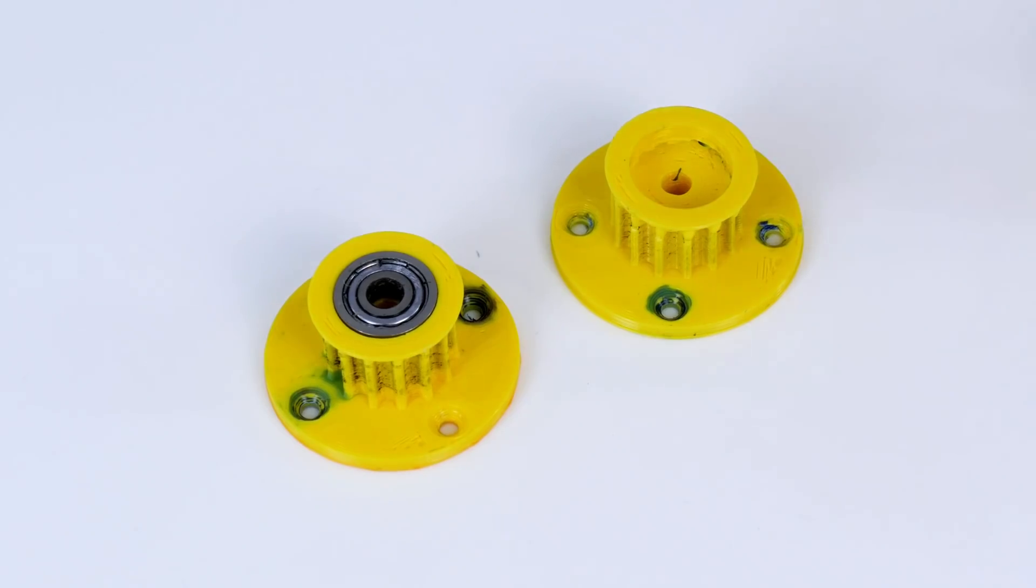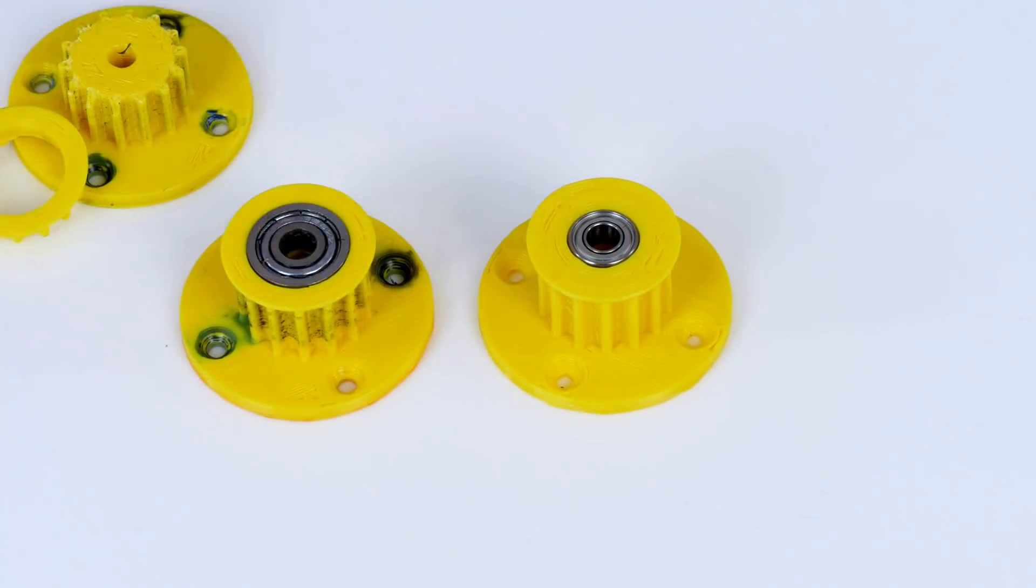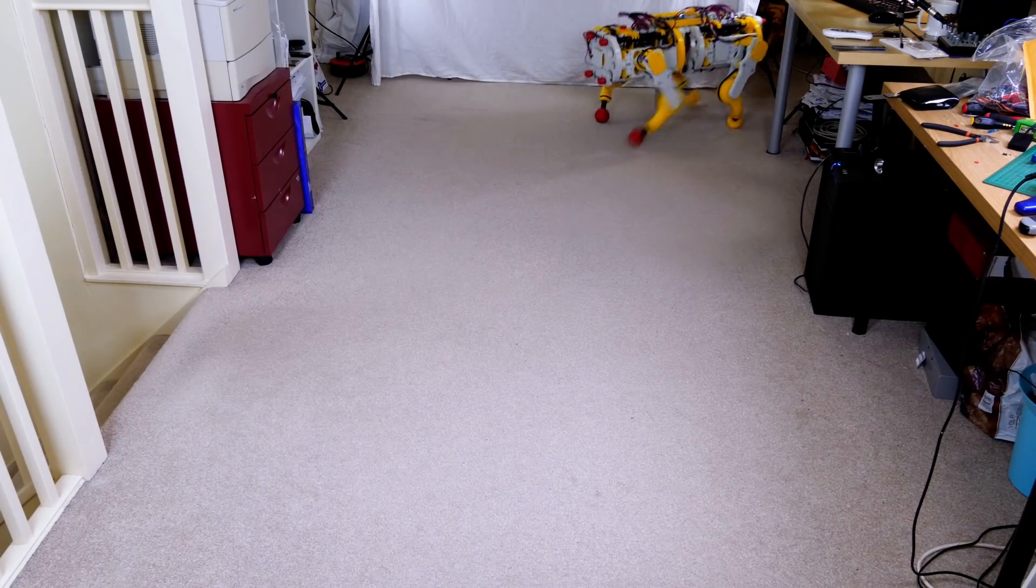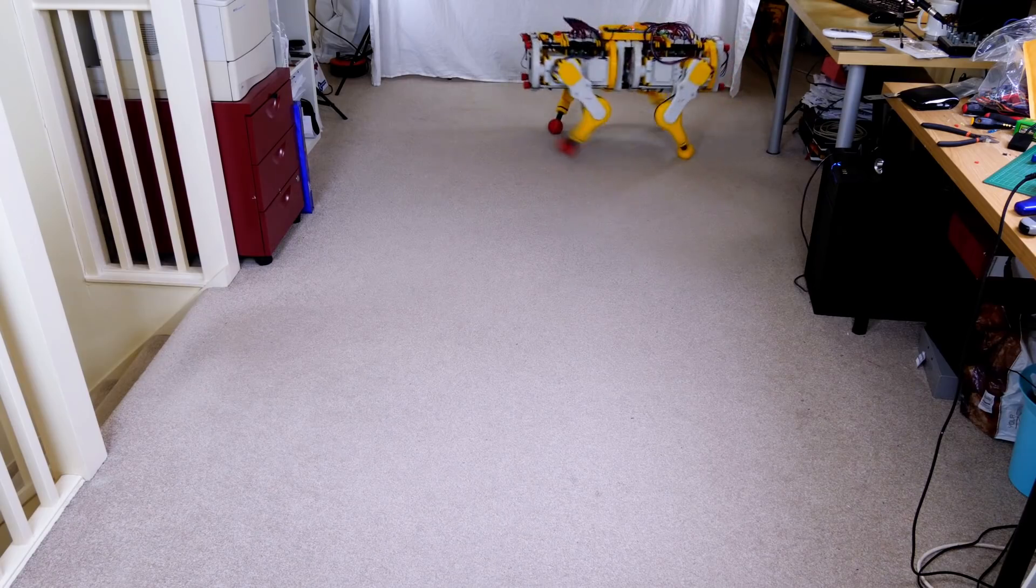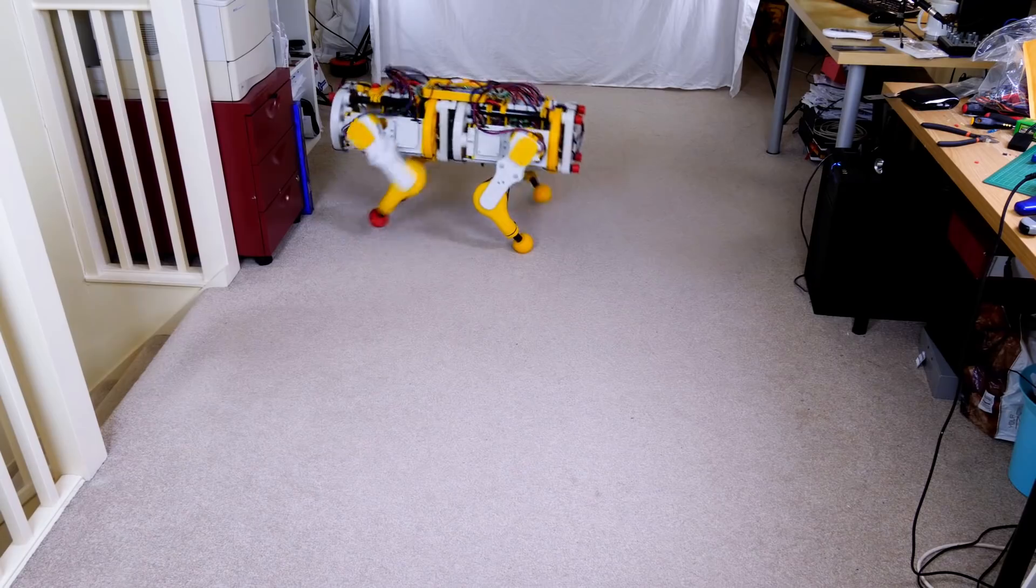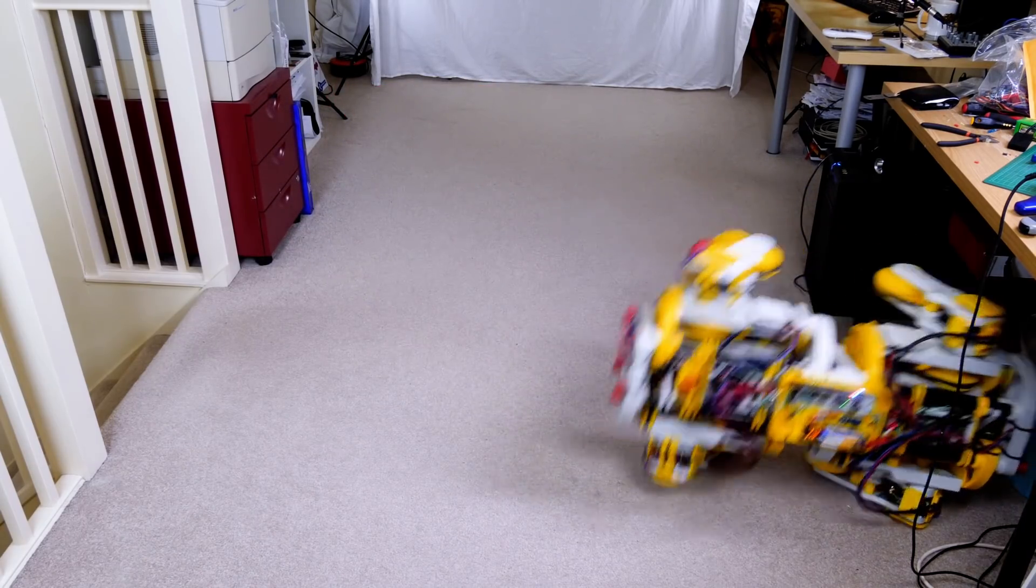Although I did have some issues with the pulleys on the knee motor breaking, I reduced the size of the bearing in the middle so now there's more plastic around it and now they're holding up. This bearing helps support the end of the pulley so the motor mount can't bend under the load of the belt. However, I only have 5 to 1 belt reductions which means there isn't an ideal amount of torque and the dog can't carry much load before its legs collapse.